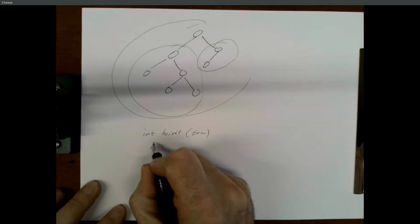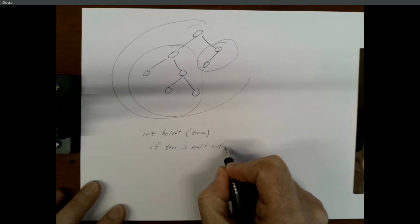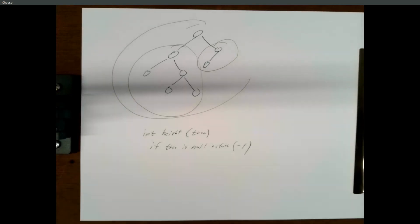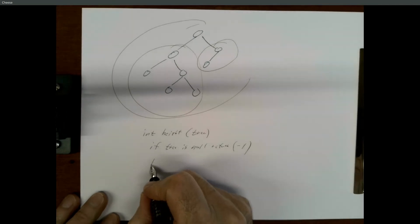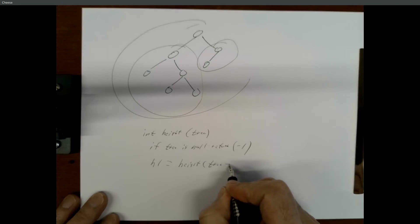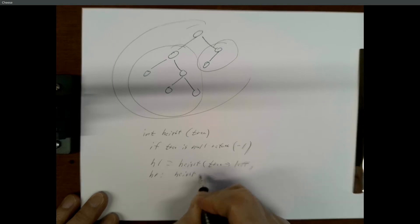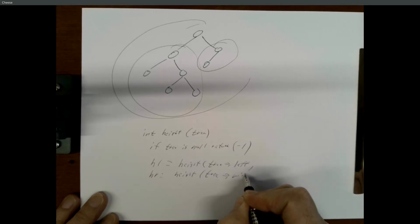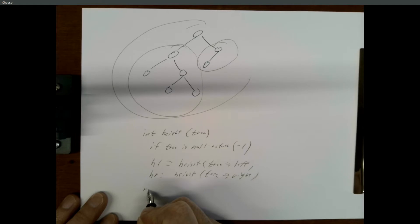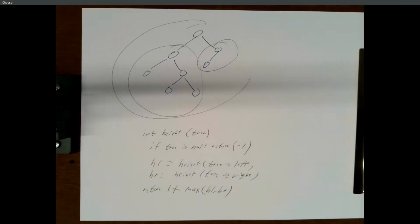So your height function can be written recursively. Put in a base case: if your tree is null, height is minus one — that's a definition. Height of the left equals height of tree left. Height right equals height of tree right.